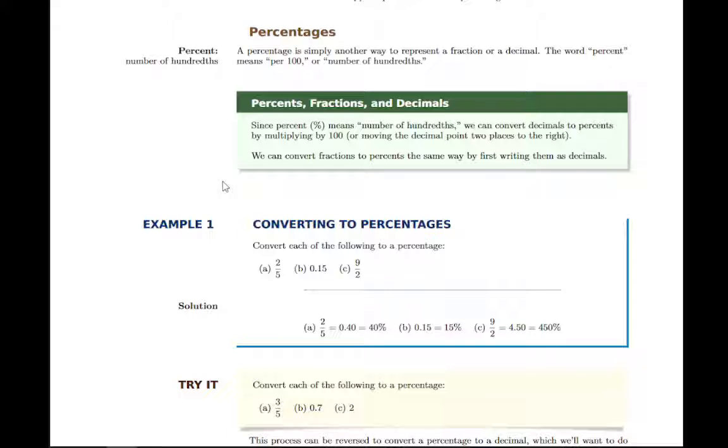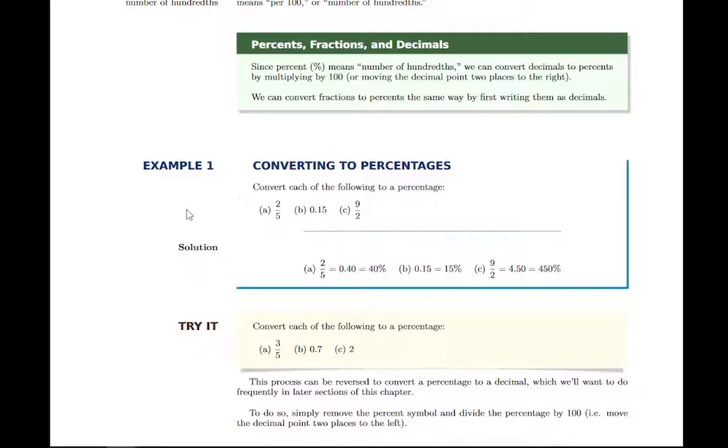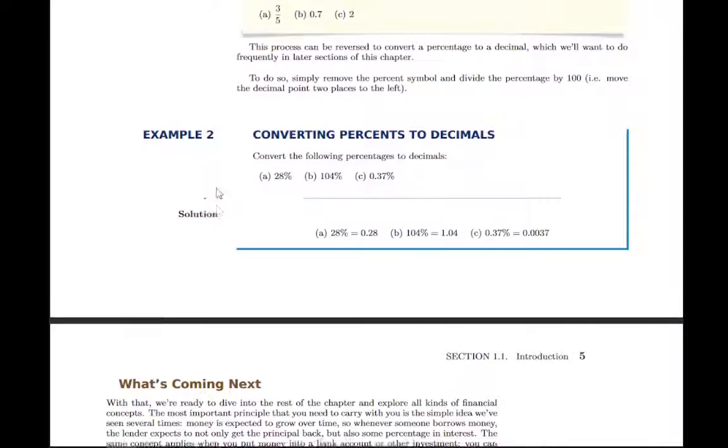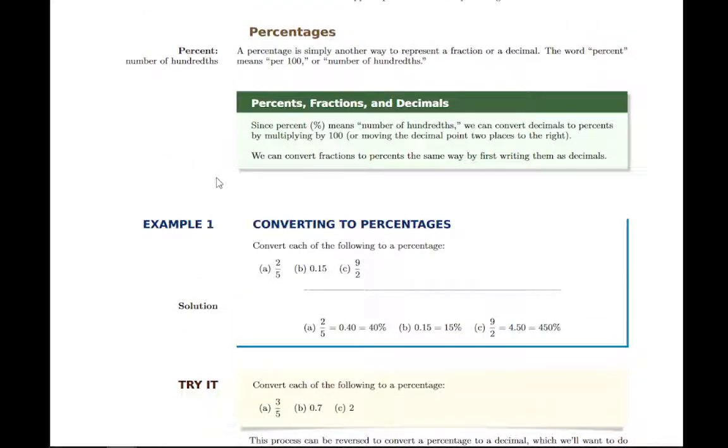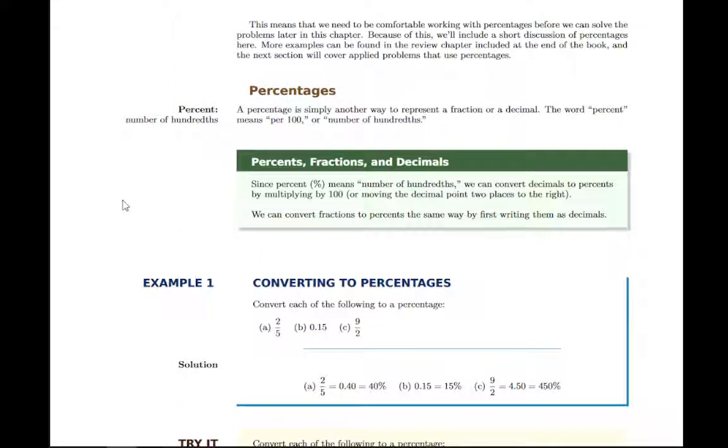But ideally, you'll get to a place where you can kind of do this quickly and naturally. If I tell you we're working with eight percent interest, mentally you should recognize that that's going to be 0.08 when we actually do calculations. That's the decimal form. So eight percent, eight hundredths. There's an eight in the hundredths place, 0.08 and so on. You should practice with these examples just to make sure that you're comfortable working with percentages, because the calculations we do will work with decimals, where the problems will state the interest rate as a percentage, and we'll need to mentally or on paper convert that to a decimal so we can do calculations.